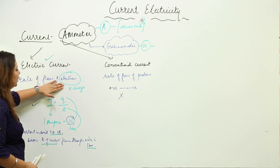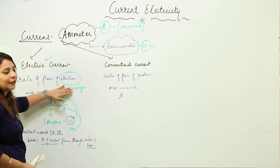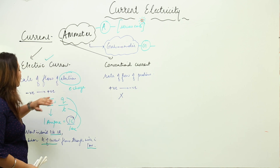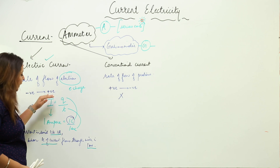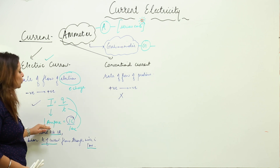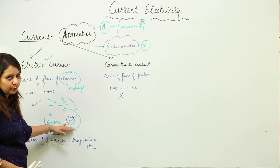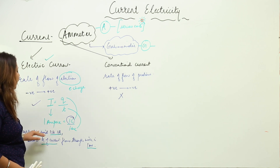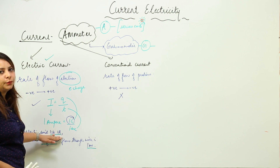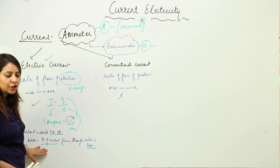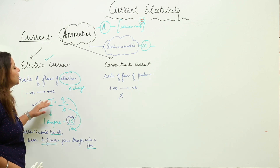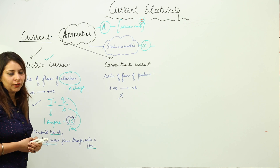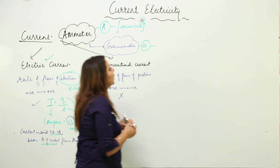To summarize: current is the rate of flow of electrons or electric charge; I = Q / T; in terms of units, 1 ampere equals 1 coulomb over 1 second; and current is said to be 1 ampere when 1 coulomb of charge flows through a wire in 1 second. That is what electric current is.